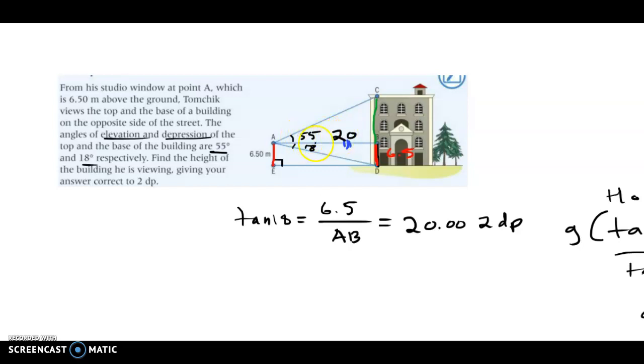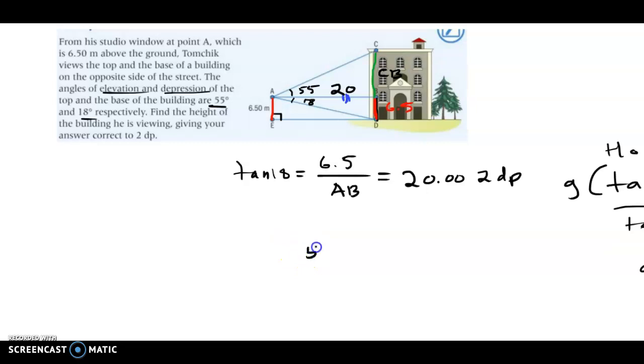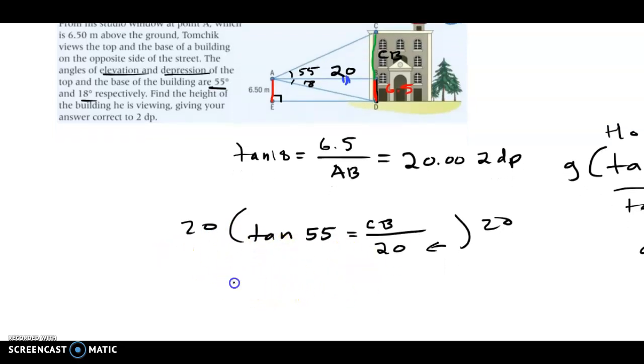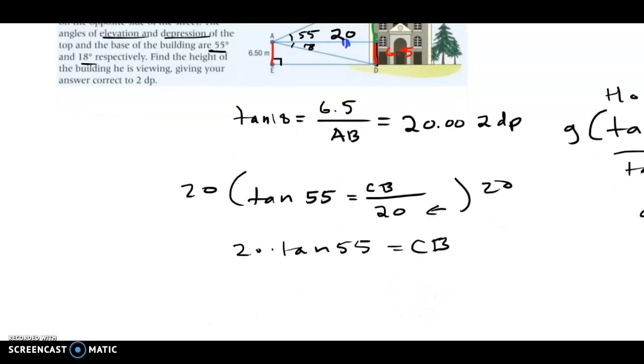So now we can use this 55 and the 20 to find CB. So to find that, we have the angle 55, and we have the adjacent, the one right next to 55, and we want the opposite. So we're going to use tangent again. So the opposite is CB, as we've labeled it, and the one we know is 20. When the denominator's an actual number, then we can just multiply both sides by that number and solve it. So 20 times tangent 55 equals our length that we want to know.